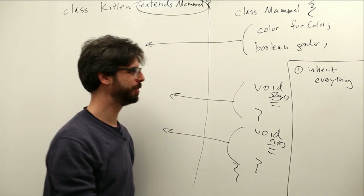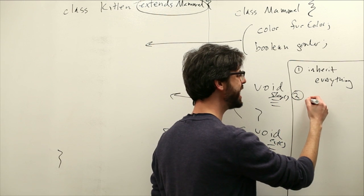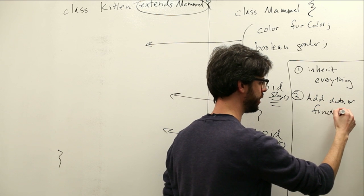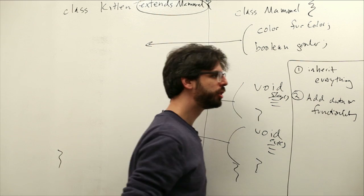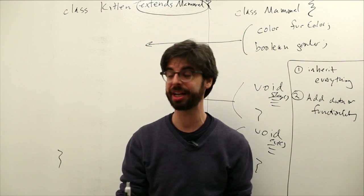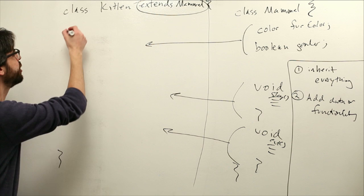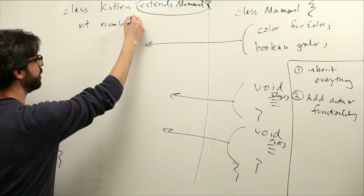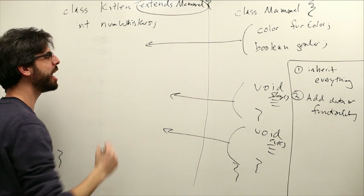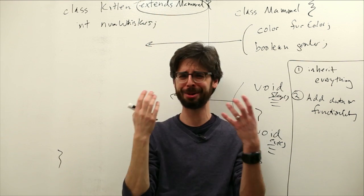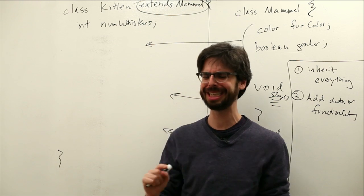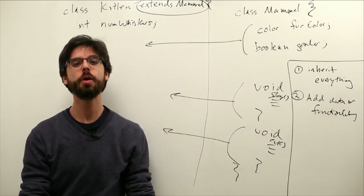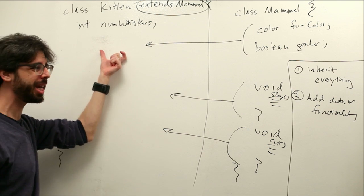What's another thing that we can do? We can add data or functionality. So we can add data or functionality. The kitten might have an integer which is the number of whiskers, for example. So this is not something that all mammals have, I don't think. I'm a mammal, right? I don't have whiskers, not really. Anyway, so kittens have whiskers. So we can add variables that are only for the kitten.